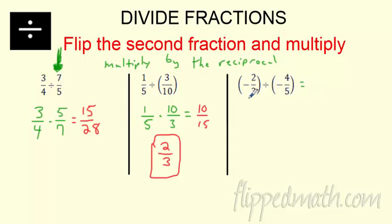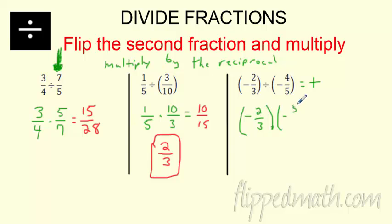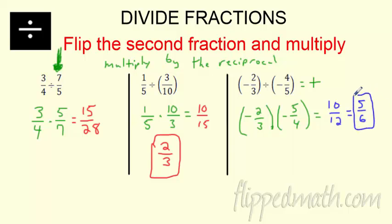Let's check out this one with negatives. Negative two thirds divided — I see negatives, so right off the bat: a negative divided by a negative is a positive, so I know I'm going to have a positive answer. Flip the second fraction — that becomes five over four — then multiply. Negative times negative is positive. Two times five is 10, three times four is 12. Does this reduce? Two goes into both: two goes into 10 five times, two goes into 12 six times. The answer is five sixths.